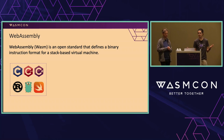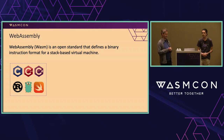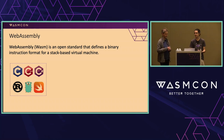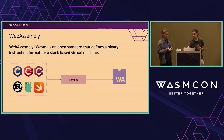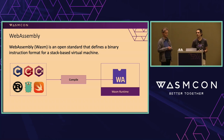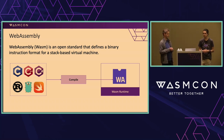WebAssembly is an open standard that defines a binary instruction format. It means you can take code in C, C++, or Rust, and instead of targeting a specific operating system or architecture, you target WebAssembly. These modules, which contain all the source scope of the application you're building, can run on top of a WebAssembly runtime or virtual machine.